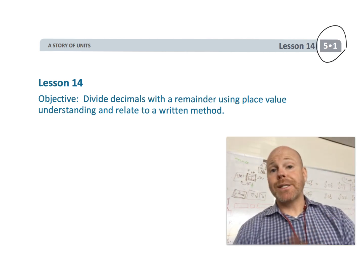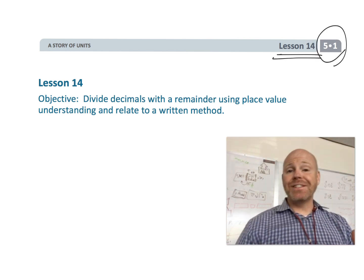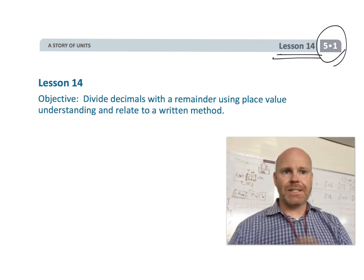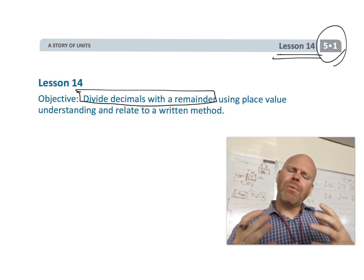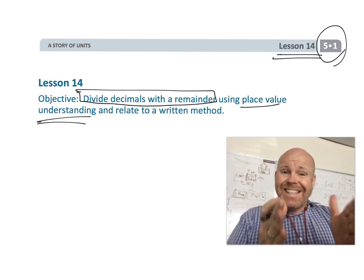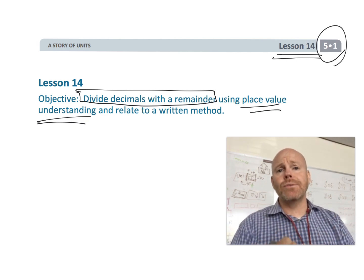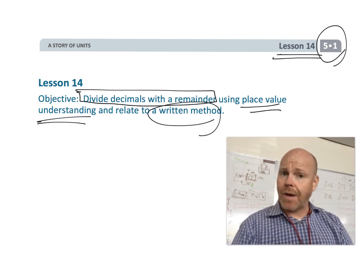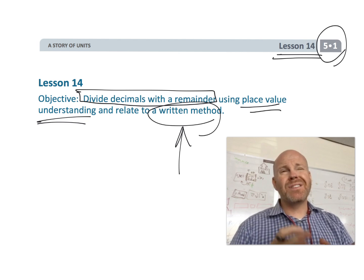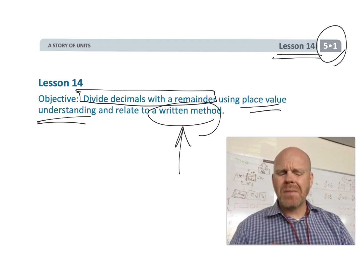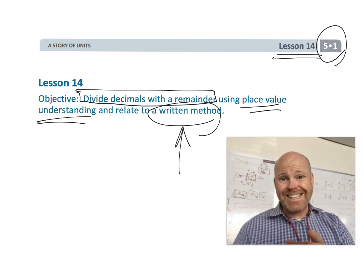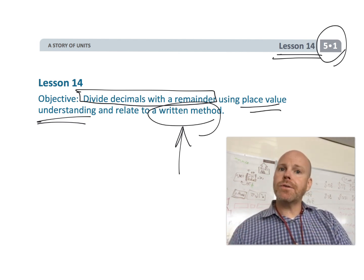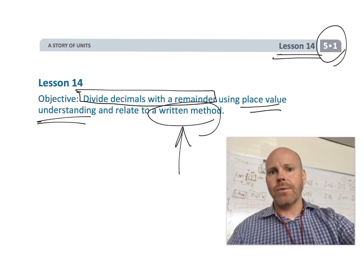This is 5th grade, module one, lesson 14. In this lesson, we're going to be dividing decimals with the remainder using the place value understanding. Students are going to be using the standard algorithm for dividing decimals by a whole number, but I'm going to begin with a couple of problems where we really use those dots in the place value technique so that students understand why the standard algorithm makes sense.